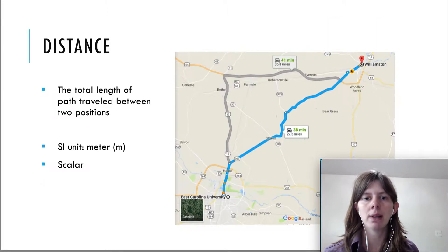The next quantity is distance. So you're probably familiar with this. How far did you travel? So in this case, if you're traveling from ECU up to Williamston, then what path did you take?